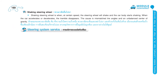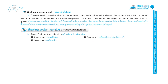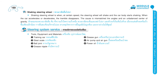Steering system service. Tools, equipment, and materials needed: training car, grease gun, steel scale, air pump and air gun, ball joint, power oil, grease nipple, fender cover, and hand towel.